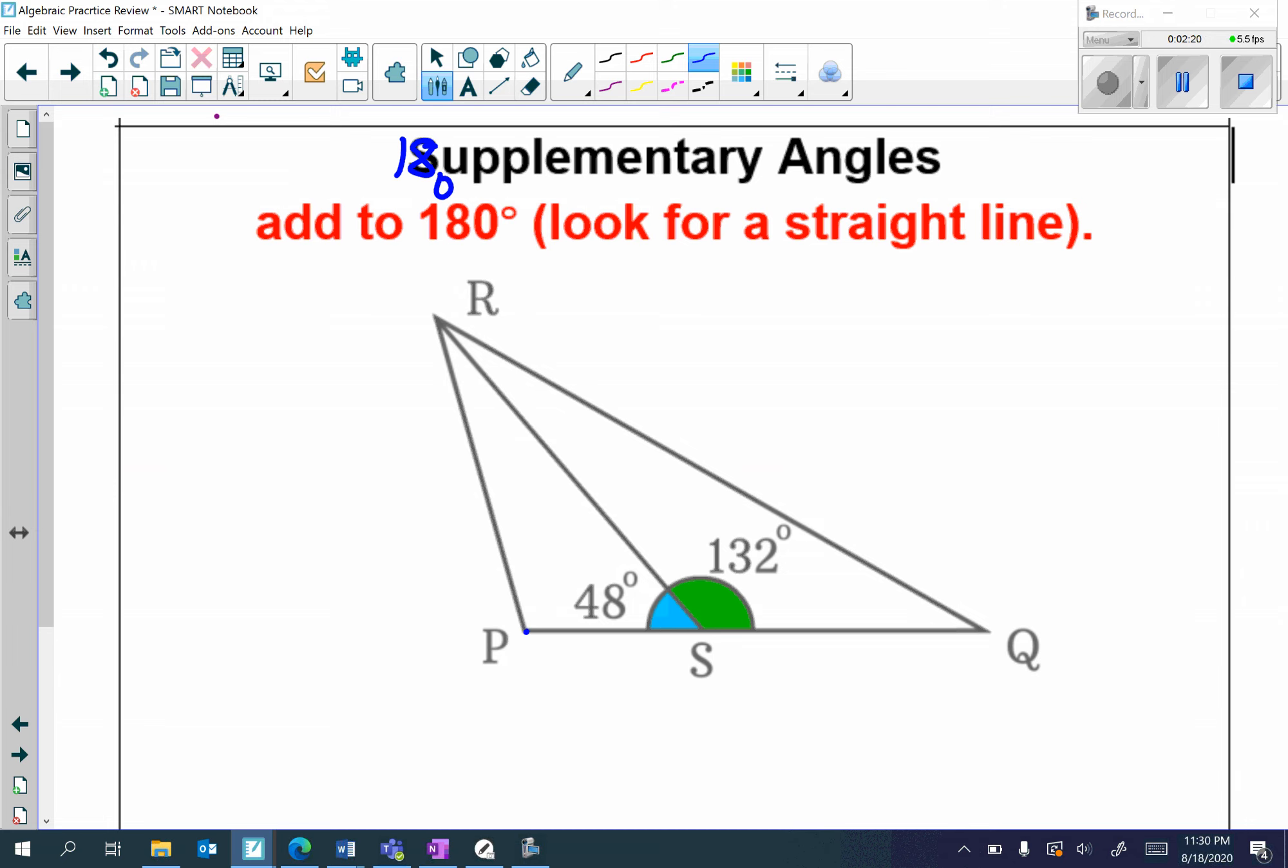So, for example, here at the bottom, line PQ is a straight line and the angles on a straight line add up to 180 degrees. So, if I add 48 plus 132, that equals 180 degrees. Angles on a straight line add up to 180 degrees and those are called supplementary angles. So, always be on the lookout for straight lines.